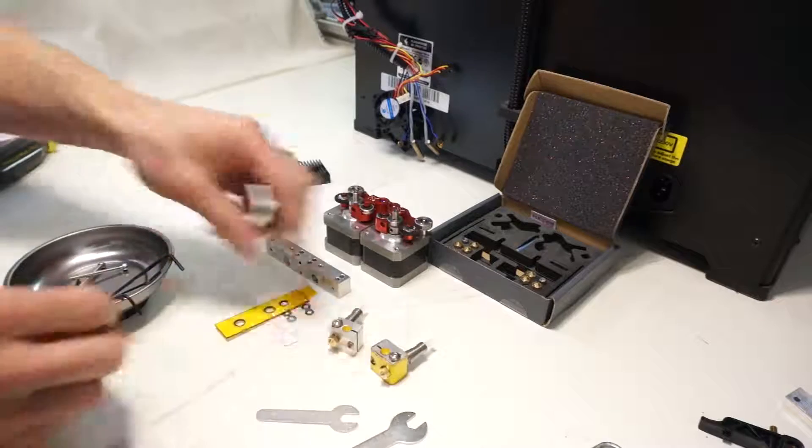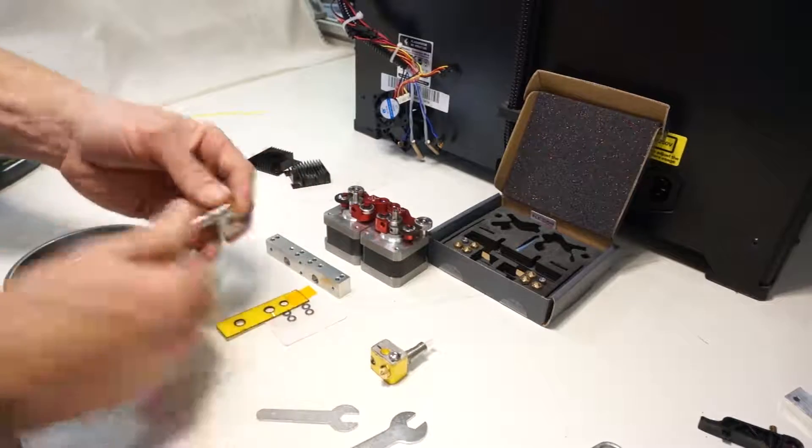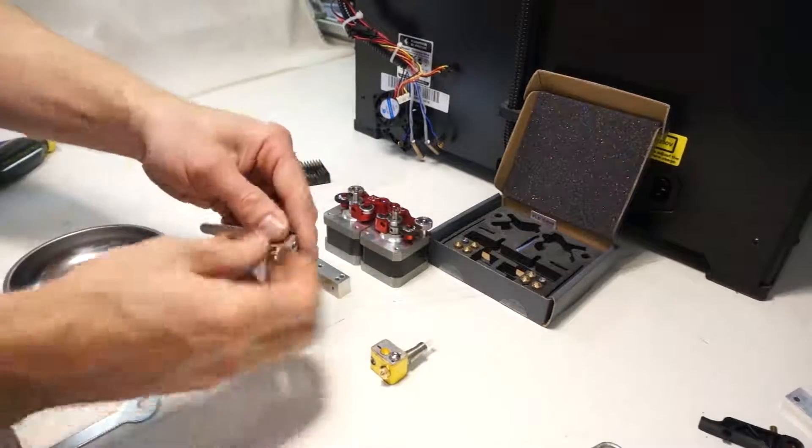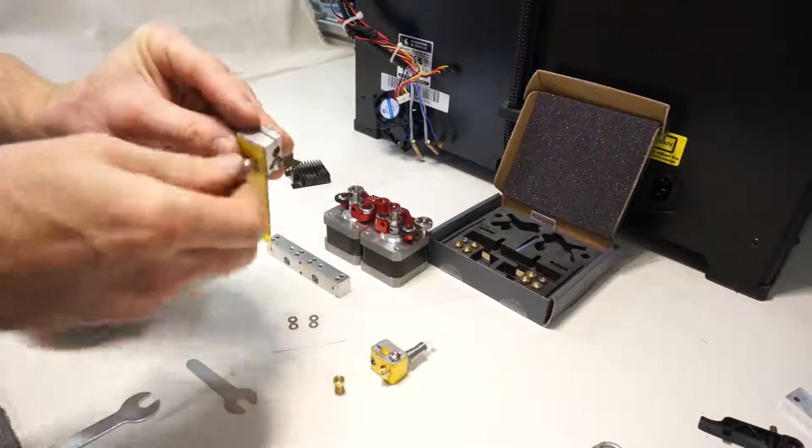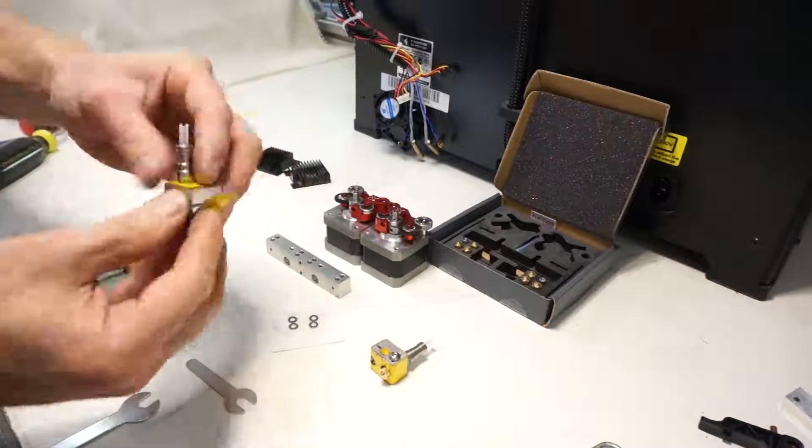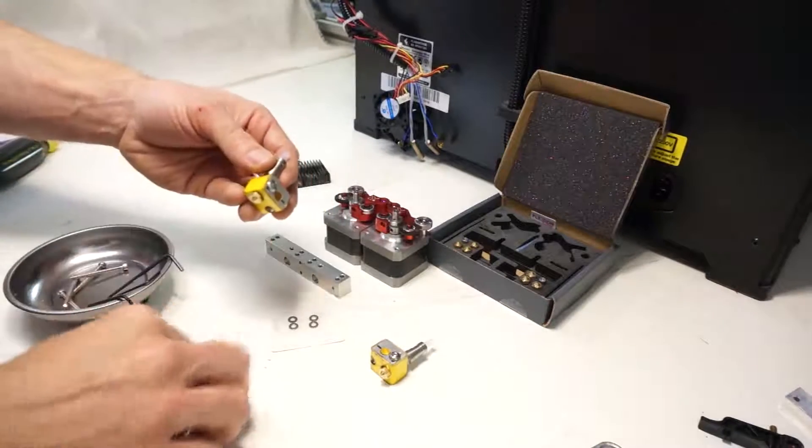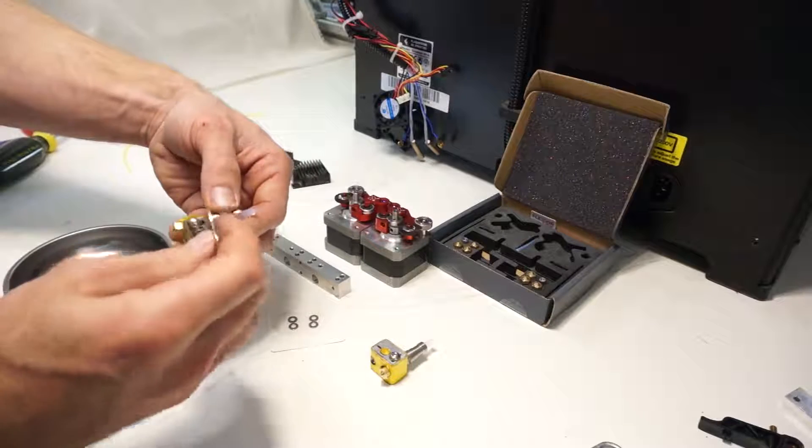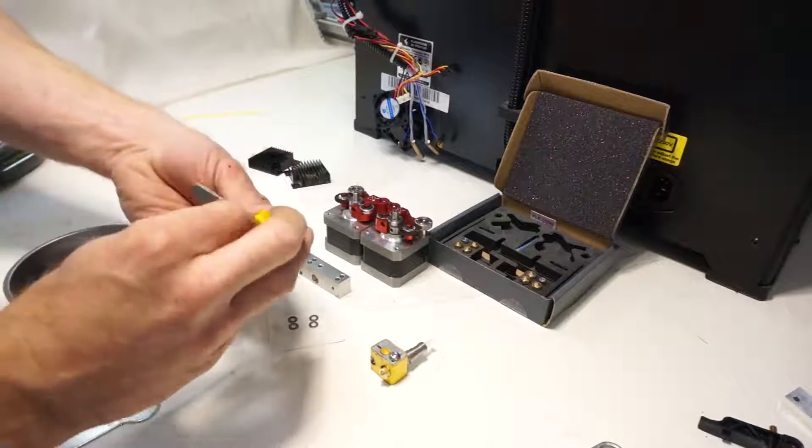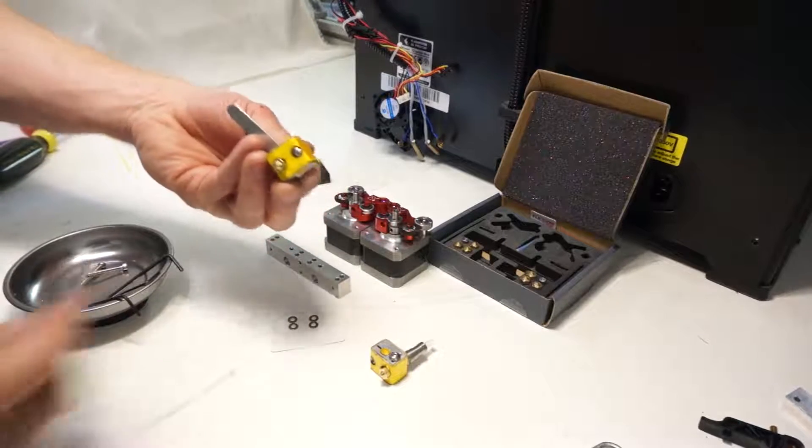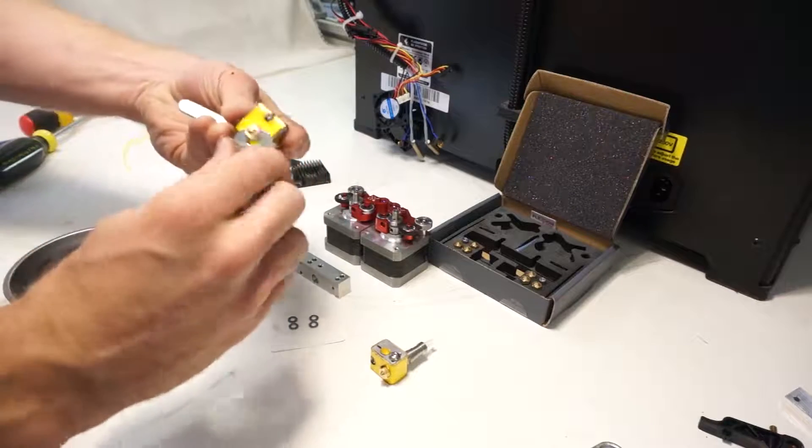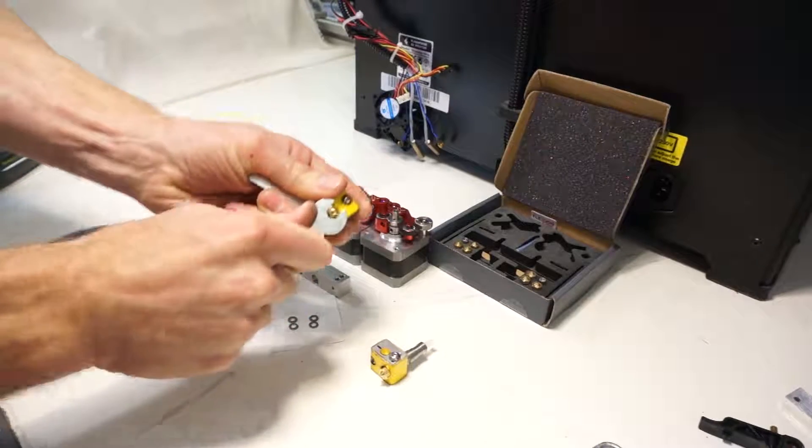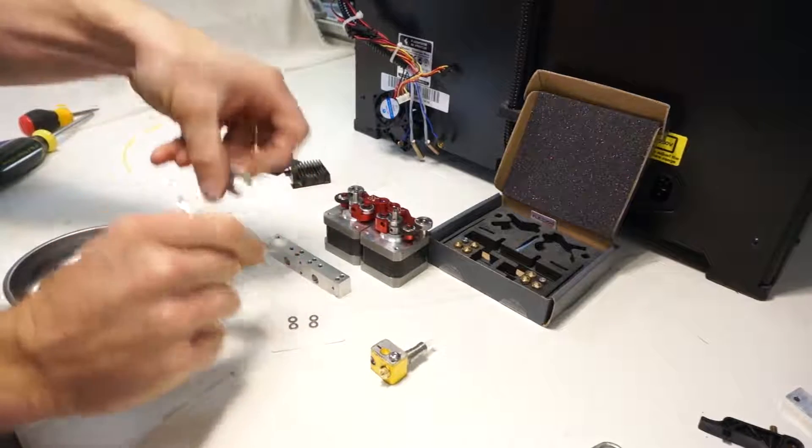And do the same thing for the second hot end. Then at the end be sure to apply torque with the wrenches included in the kit between the barrel and the nozzle on both hot ends. This creates a seal and prevents melted plastic from leaking out of the hot end.